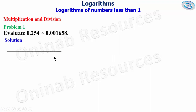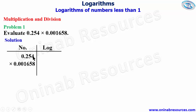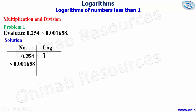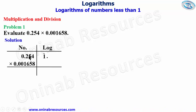We start the solution using the tabular form, with number and log columns. We place 0.254 and 0.001658 in the number column. The integer part of 0.254 is bar one, since in standard form the power of 10 is negative one. From the logarithm table, .25 under 4 gives 4048.